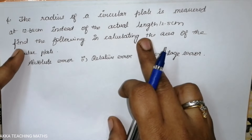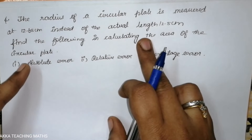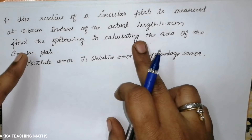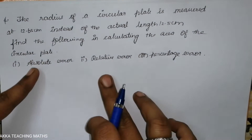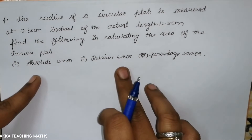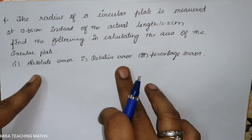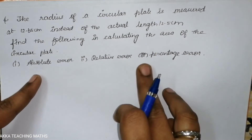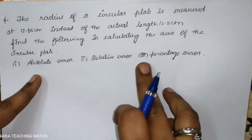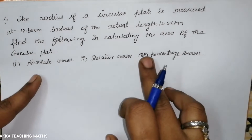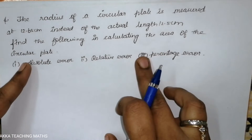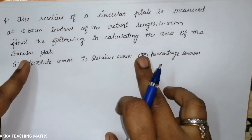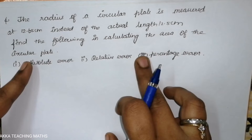If you calculate what the area of the circular plate is, you can calculate it using the formula. The area of the circular plate is pi r square.